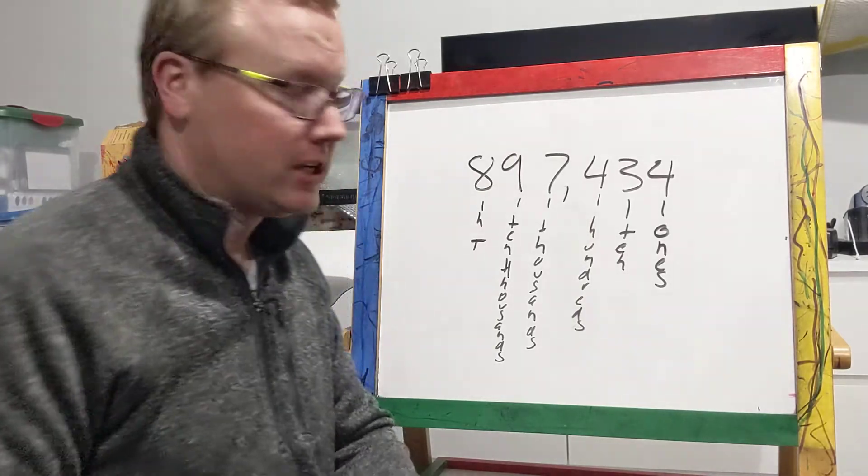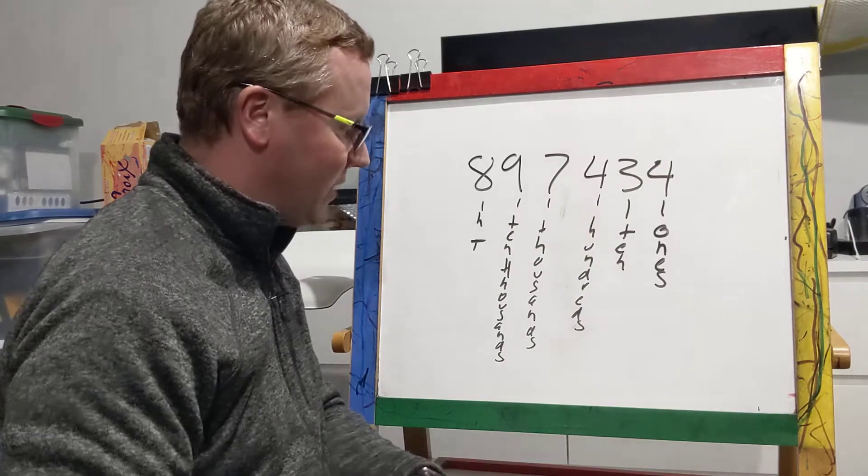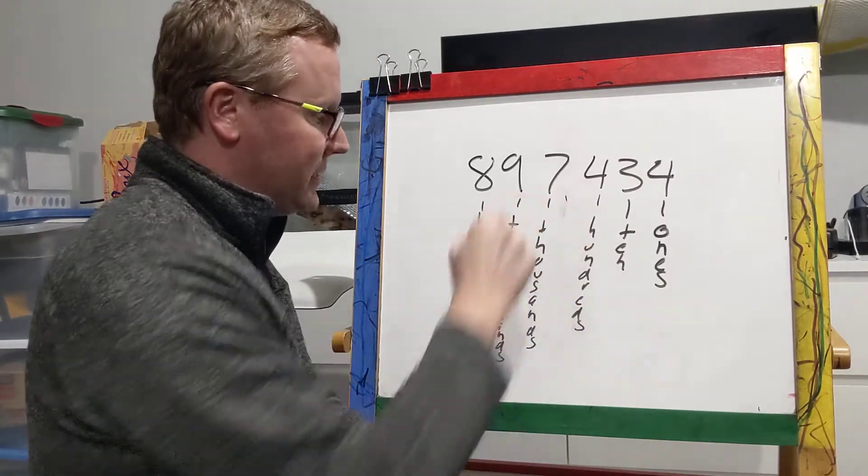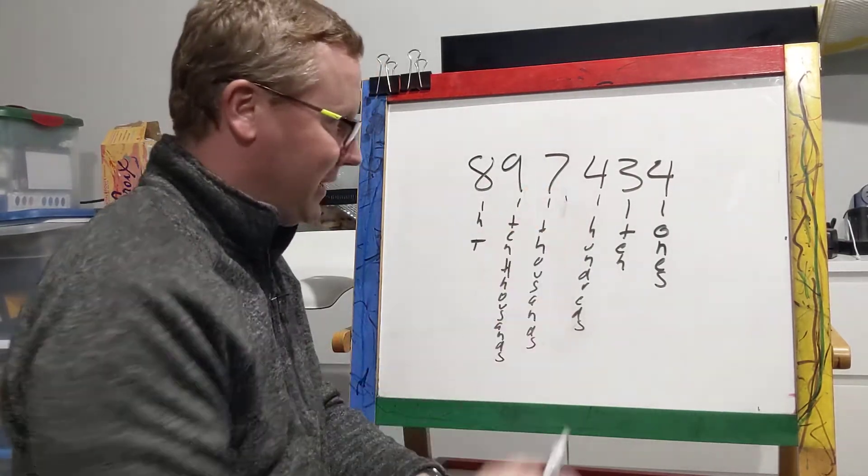And since we just covered it, you'd be like, oh, it's seven, Mr. B, seven. Or sorry, nine, Mr. B, nine. That's the thousands place.